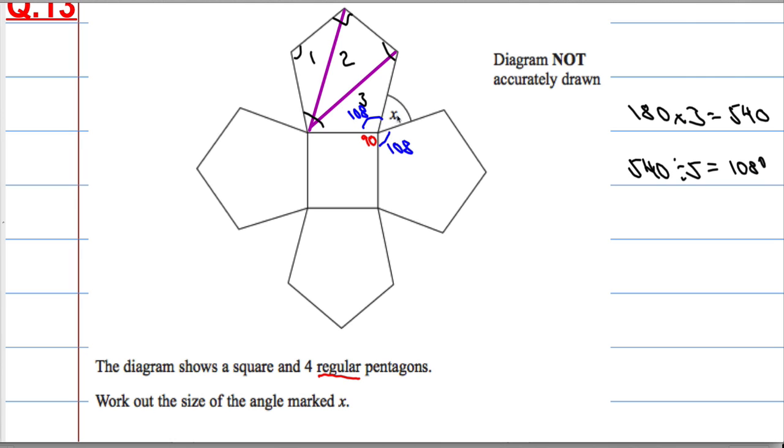Okay, so now what I need to do is add the two blue angles and the red angle and take it away from 360 to get X. So we're going to have 108 plus 108 plus 90 equals - well that's going to be 216, which is going to give me 306 altogether.